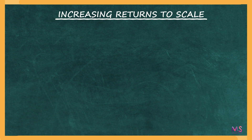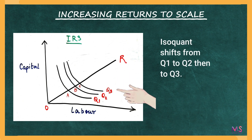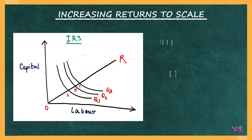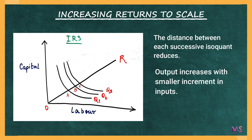Diagrammatically, we can also show Increasing Returns to Scale. Returns to scale are usually explained with the help of isoquants. Here, the X-axis represents labor and the Y-axis represents capital. When more inputs are employed, production increases, causing the isoquants to shift from Q1 to Q2 and then to Q3. As the isoquants shift, the distance between each successive isoquant reduces — that is, the distance between Q1 and Q2 and then between Q2 and Q3 decreases. This implies that output increases with smaller increments in input, meaning less input is employed and the output produced is more than proportionate.